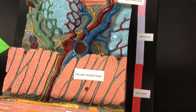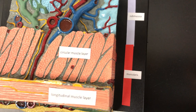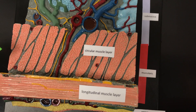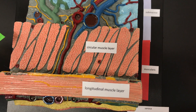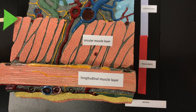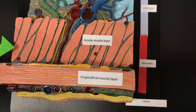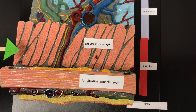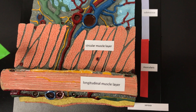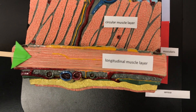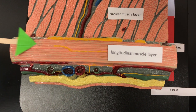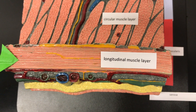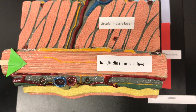Below the submucosa layer we have the muscularis layer, and the majority of the alimentary canal has two layers. There's a circular layer that helps move the contents through the tube, and then a longitudinal muscle layer that runs lengthwise and contracts like a caterpillar.